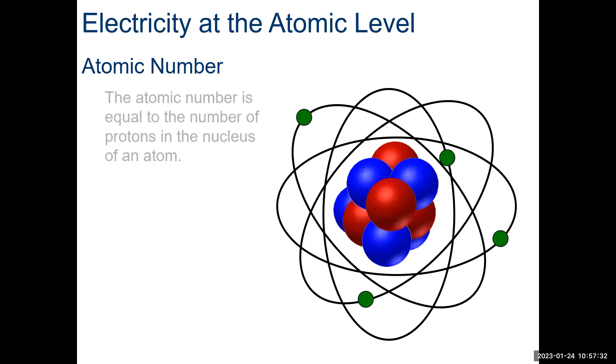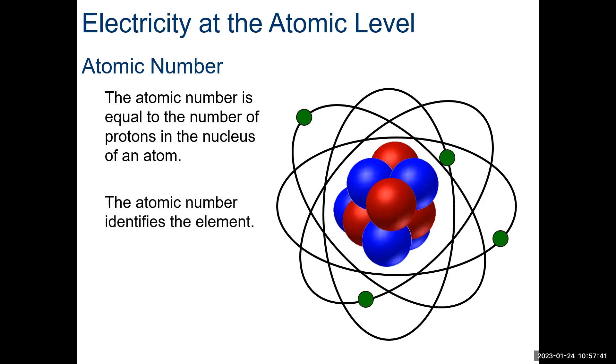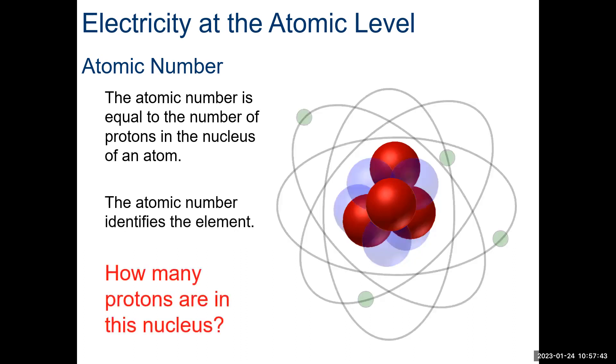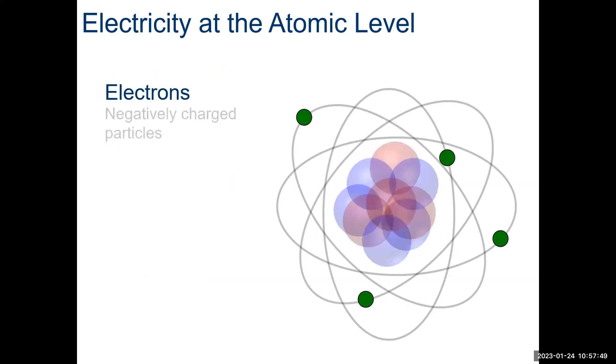So, the atomic number is generated from protons in the nucleus. So, those red protons, that's how we get the atomic number. It identifies the element, and this one has four protons in its nucleus.